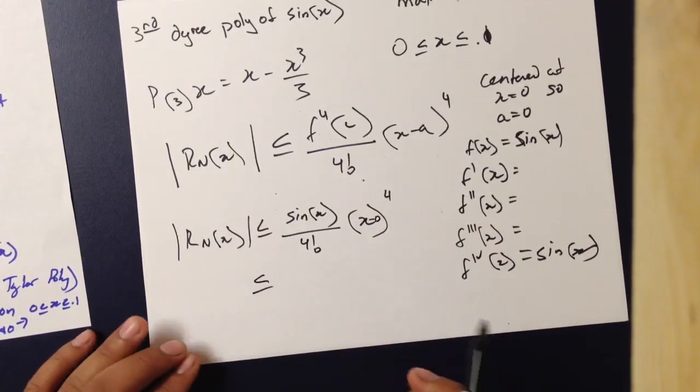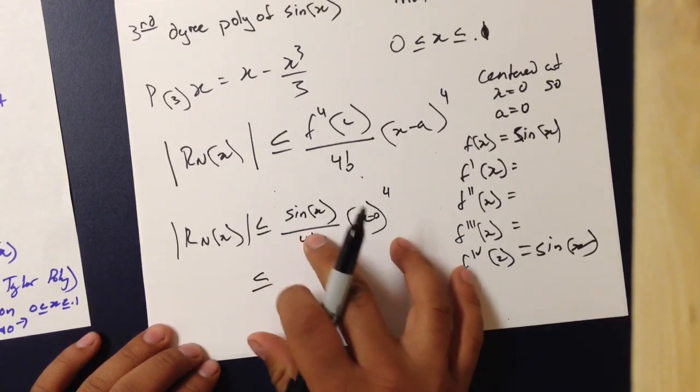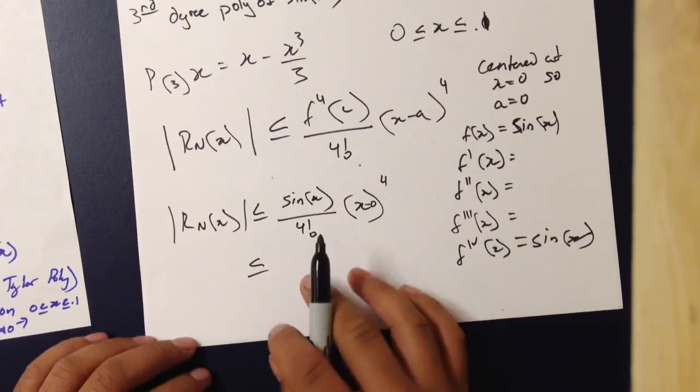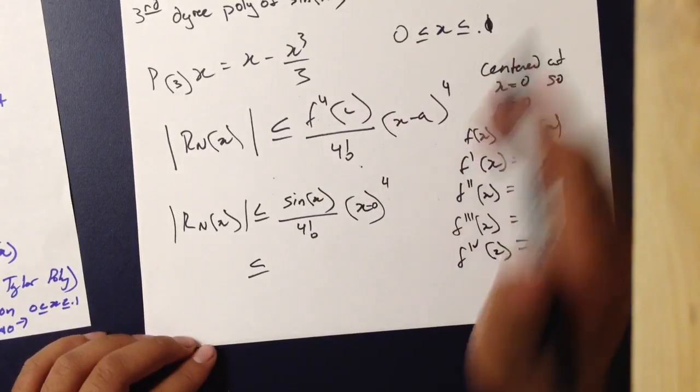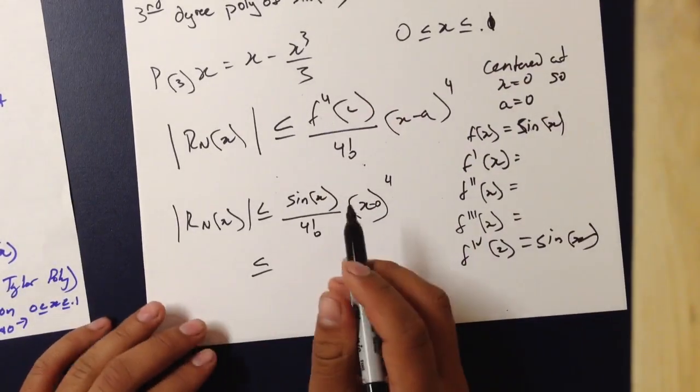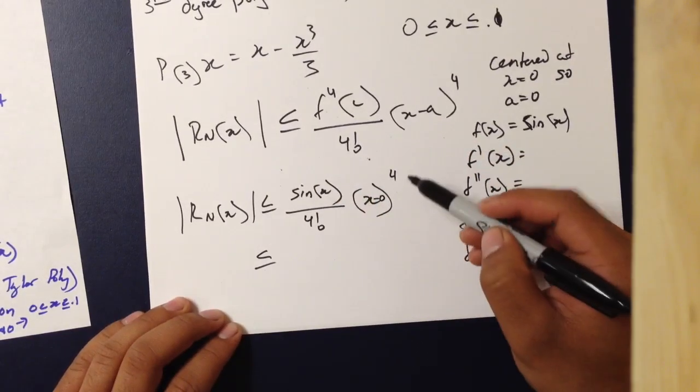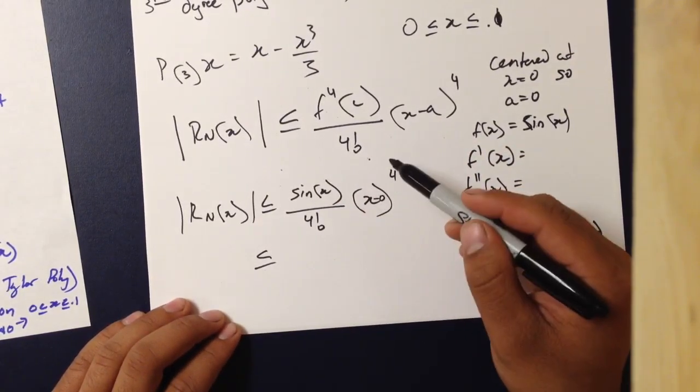So, we can now plug in values of x into this formula within the domain 0 to 0.1. Again, we're trying to maximize this value. So, we're trying to make this number as large as possible, and we're trying to make this number as large as possible.